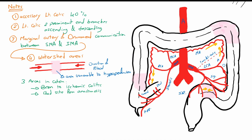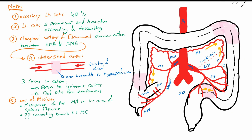The arc of Riolan is a controversial artery — or communication — between the middle colic artery and the left colic artery. Many surgeons argue that this artery does not exist, or exists only in extremely rare cases as a direct connection between the middle colic and the left colic artery, and is only a misnomer for the connection between them, which is the marginal artery of Drummond.